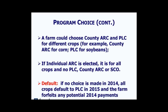This has to be a unanimous decision made for the 2014 crop year, and it will be irrevocable for the life of the Farm Bill. If the farm does not make a choice in 2014, all crops will default to the Price Loss Coverage Program in 2015, and the farm will forfeit any potential 2014 crop year payments. So if a unanimous decision is not made in the timeframe provided by FSA, your farm defaults to PLC beginning in 2015.